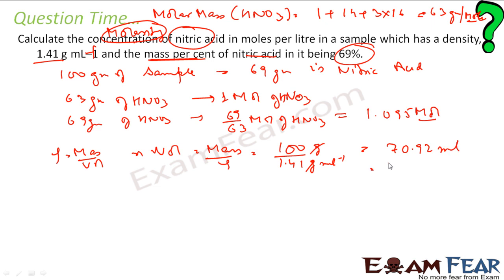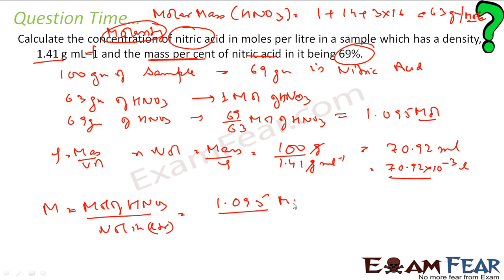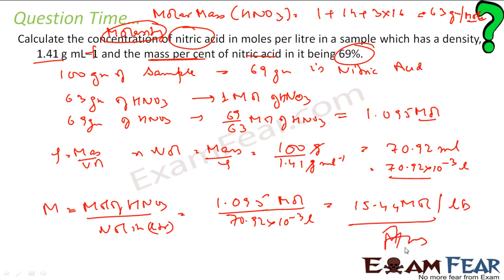I convert this into liters because molarity is in liters, so this becomes 70.92 × 10⁻³ liters. Molarity is moles of solute (HNO3) divided by volume in liters: 1.095 moles divided by 70.92 × 10⁻³ liters, which gives 15.44 moles per liter. That is my molarity.